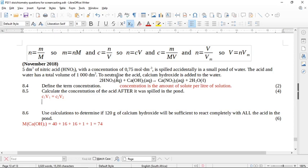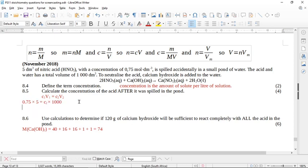So the concentration initially was 0.75 and the volume initially was 5 cubic decimeters, and this is going to be equal to my second concentration multiplied by what was the volume? The new volume of the pond was 1,000. So by the joy of algebra, we can work out that this is going to be 0.75 times 5 divided by 1,000, which is going to give me 3.75 times 10 to the negative 3.